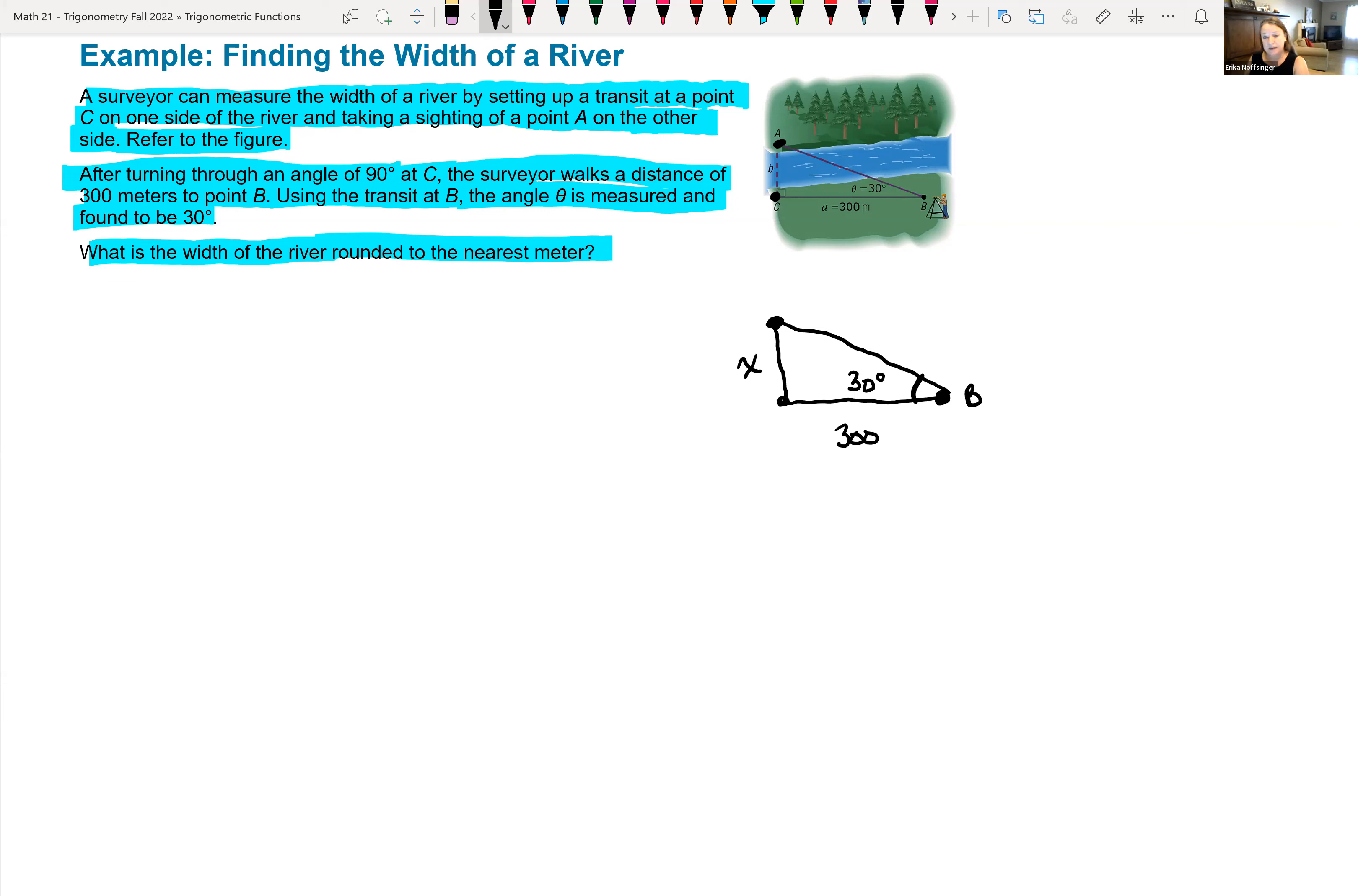When you're doing these, think about which trigonometric function that we should use. We're trying to find the opposite of 30 degrees, which is x, and we know the adjacent side. So, I would think to myself, which trigonometric function uses opposite and adjacent? And I would tell myself, well, tangent does.